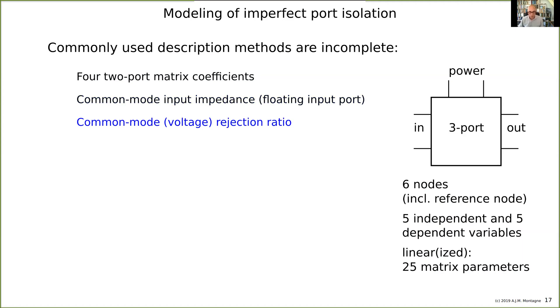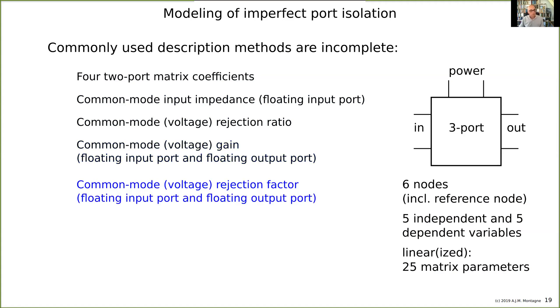We have something like a common mode voltage rejection ratio that you also find in books about operational amplifiers, then a common mode voltage gain from the common mode input to the output, the rejection factor, and the supply rejection. So if we need 25 parameters and we have only about nine, then we have not a complete description.